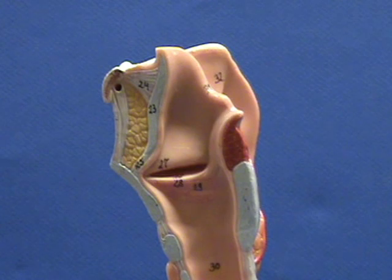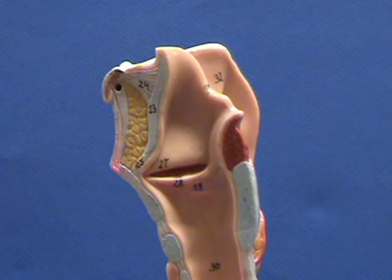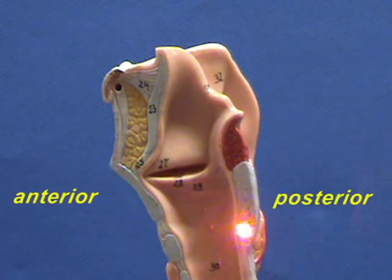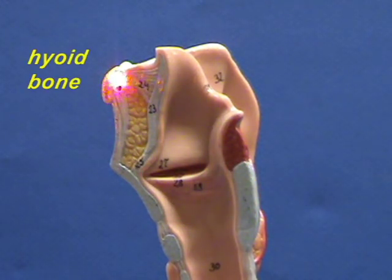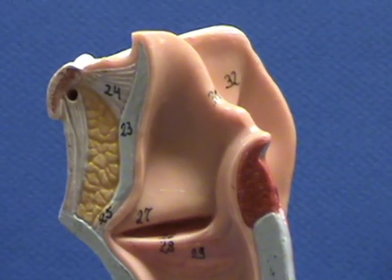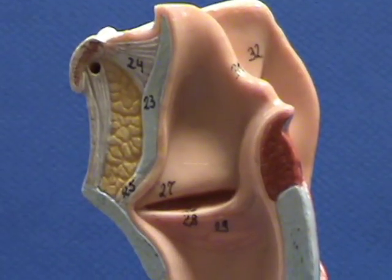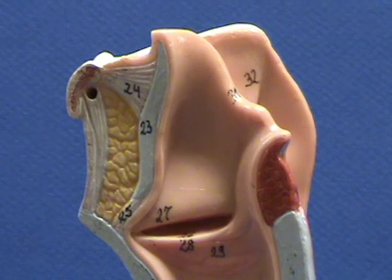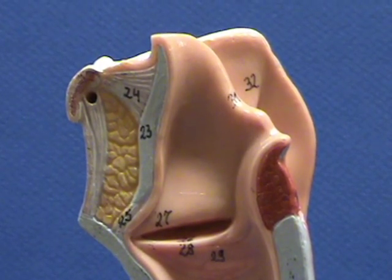We are looking at a sagittal section through the larynx. Right over here is the anterior part, and here is the posterior part. Right over here is the hyoid bone. The hyoid bone is attached to the larynx by a couple of ligaments that you can see in this view.